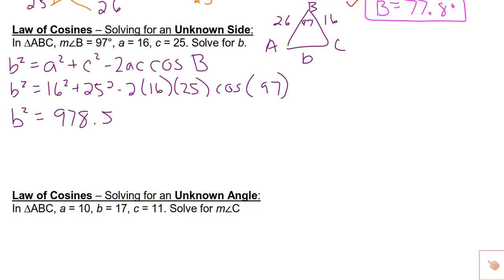But that's what b squared is equal to. So to solve for b, I have to square root both sides. And I see that b, if it's rounded to the tenths place, is 31.3.